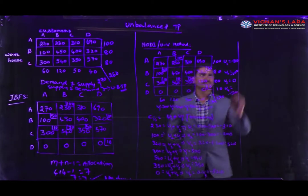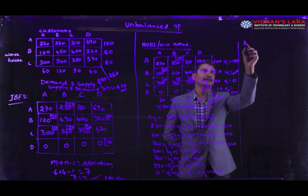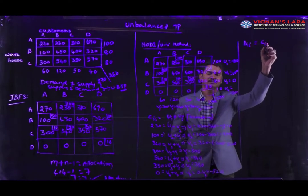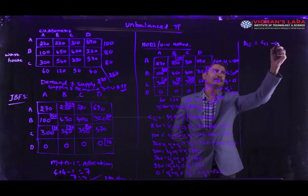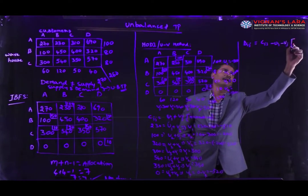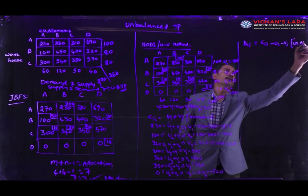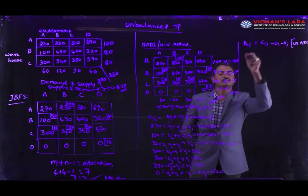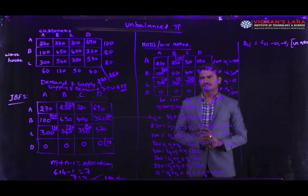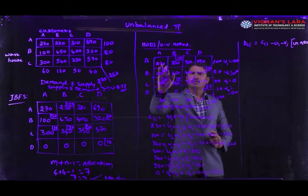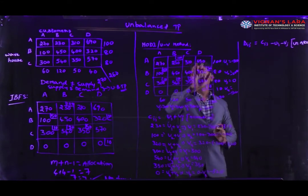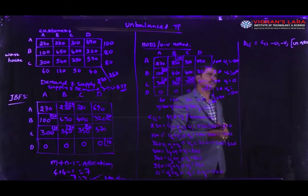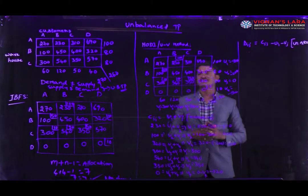Now we are going to check the optimality using delta_ij = c_ij − u_i − v_j. This is for unallocated cells. We have 9 unallocated cells, and for those 9 cells we are going to calculate the delta_ij values.